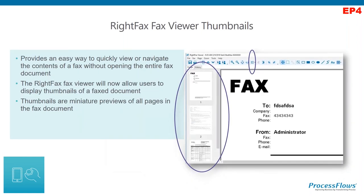Another enhancement added at EP4 was an improvement to the viewer, available in both the web and desktop client. This adds thumbnails that you can turn on and off. If your users are used to not having them, they're not forced to use them. It seems like a minor thing — most image viewers have had this for 20 years — but this came in with EP4.